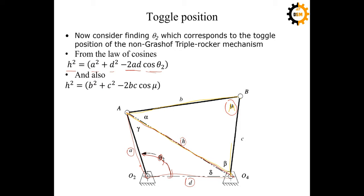We already have all four link lengths: a is link 2, b is link 3, c is link 4, and d is link 1. For the toggle positions, we know that mu will be equal to 0° or 180°. This is because at toggle, links b and c become collinear, making their included angle either 0° or 180°. We will consider both values rather than ignoring either one.